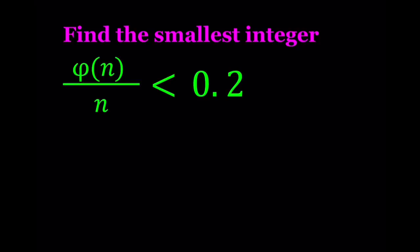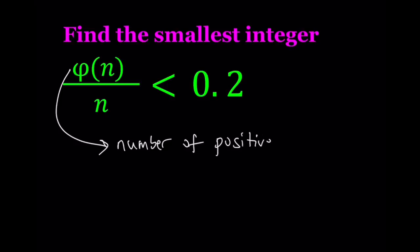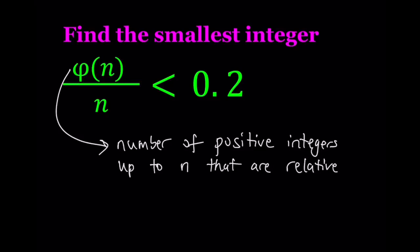Let's go ahead and define the totient function, which is also called Euler's totient function. We use the Greek letter phi to represent it. Phi of n is defined as the number of positive integers up to n — that is, numbers less than or equal to n — that are relatively prime to n.